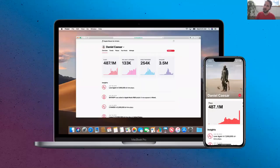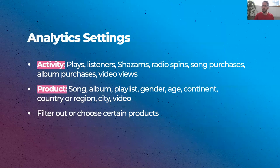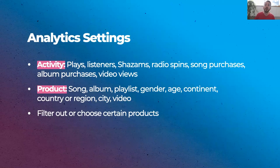But what they lack in profile customizability, they make up in analytics. It's a very impressive analytical suite with some very granular settings. The analytics don't just cover the streaming service, but also iTunes purchases as well as Shazam. There are a lot of different selections and filters you can use when looking at performance trends on Apple Music for Artists. First, you can decide which activity you want to look at — plays, listeners, Shazams, radio spins, song purchases, album purchases, or even video views. You can then also choose what kind of product or entity you want to analyze.